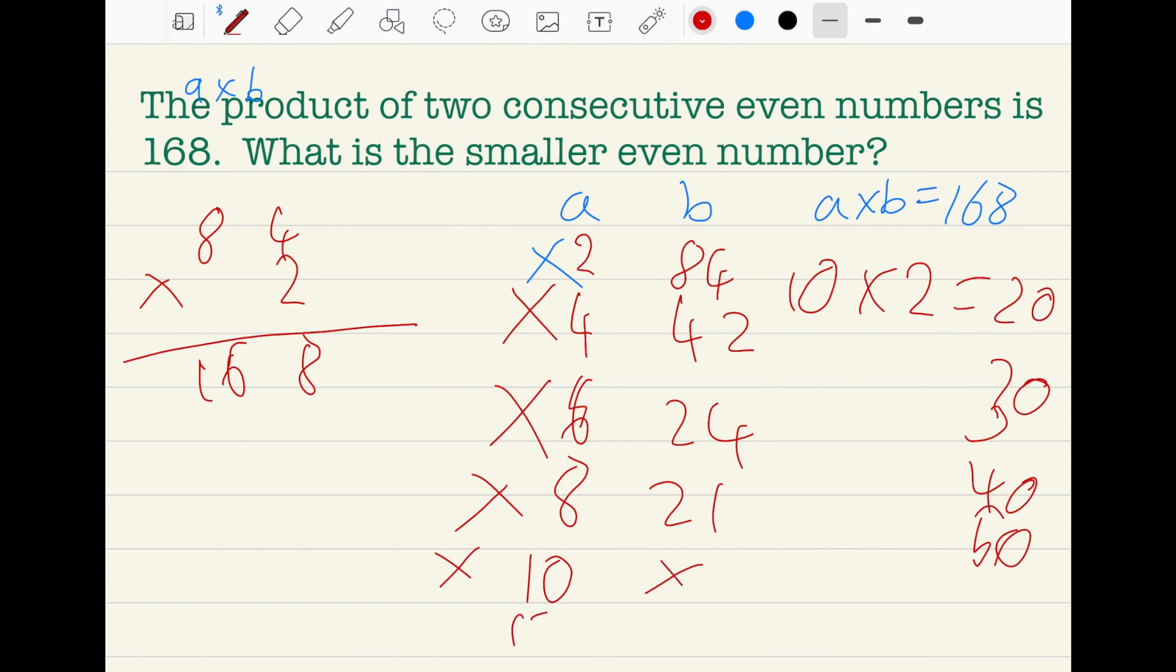Now we go on to 12. So 12 times 14 equals 168 and it is also consecutive. There's just this 13 in between it, but that is odd, so we don't need that. Goodbye 13. So 12 times 14 is the answer.